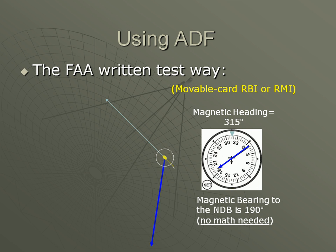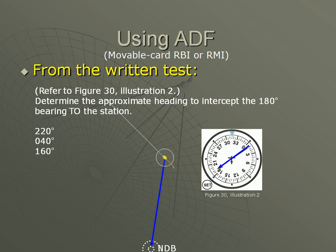The written test asks to determine the approximate heading to intercept the 180 bearing to the station. You could look at the ADF, imagine a turn to 180, and note that the needle would still be to the right, so you would still need a turn right of south in order to intercept the course. Or, you can draw the 180 bearing to the station, and then it's easier to see that a heading of southeast would intercept the course, and quickly eliminate the other headings.